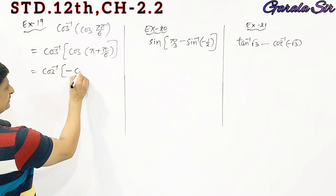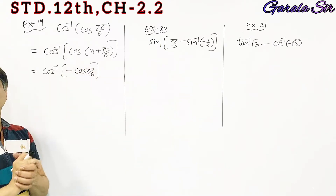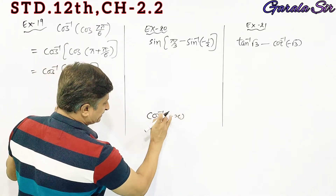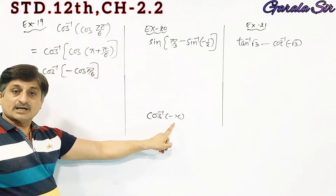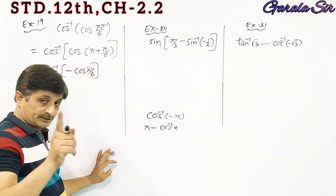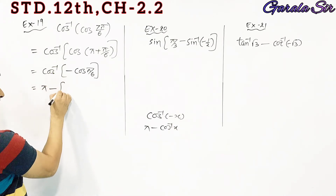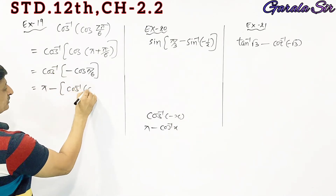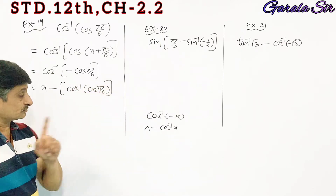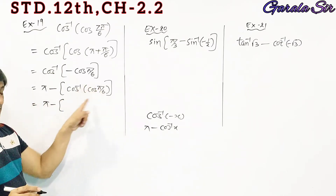So, cos inverse minus cos(π/6). We are going to use the identity: cos inverse of minus x equals pi minus cos inverse. So we are going to get pi minus cos inverse cos(π/6).